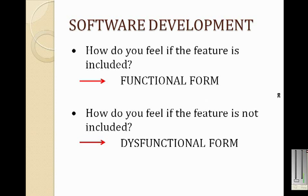One simple solution is to ask users the following two questions. The first is: how do they feel if the feature is included in the end product? The second is: how do they feel if the feature is not included in the end product? The first question is regarded as the functional form of questioning, and the second is regarded as the dysfunctional form of questioning.